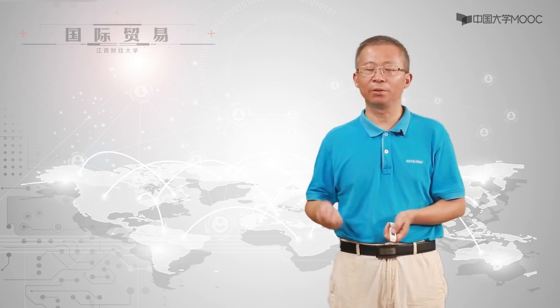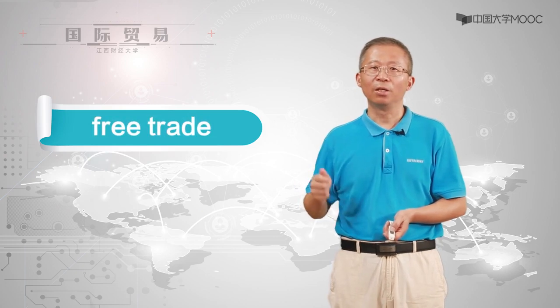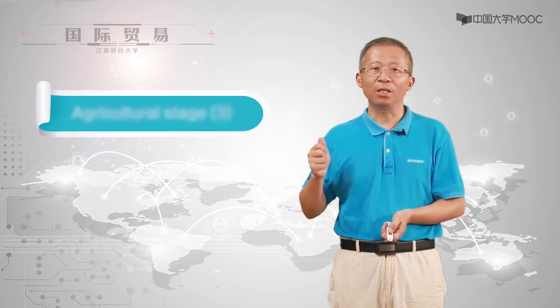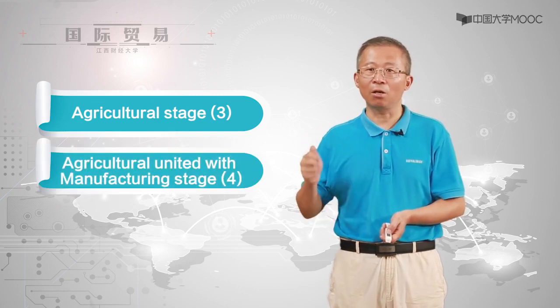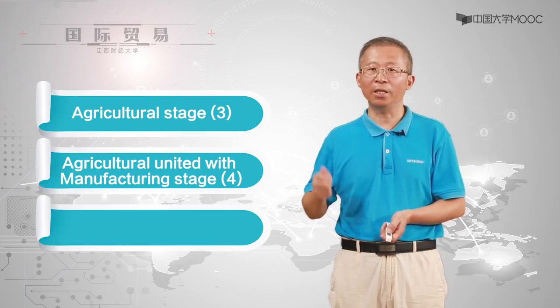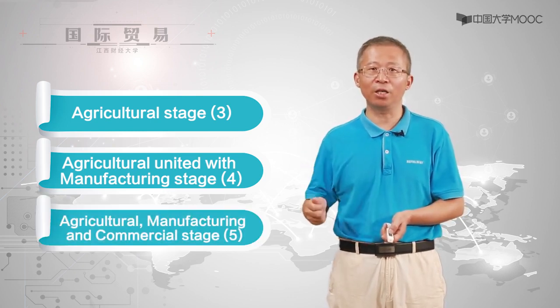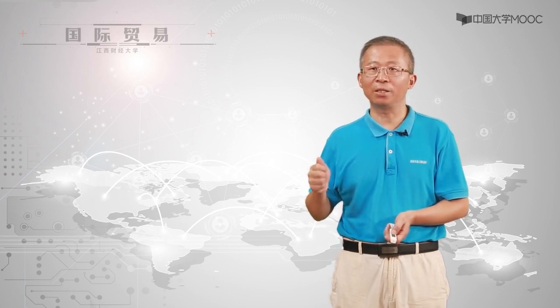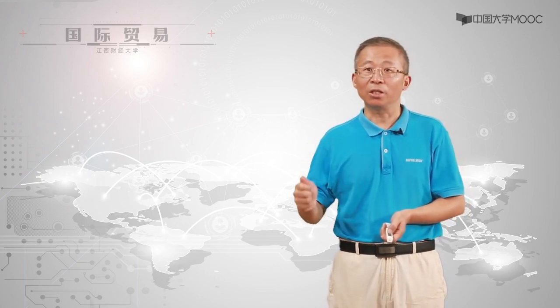According to List, every country should start with free trade. To develop a strong agricultural industry, they should export raw materials and import manufactures. They should then progress from the agricultural stage to the agricultural united with manufacturing stage, and later to the agricultural, manufacturing, and commercial stage. List assumed that such developments cannot emerge automatically through the natural causes of things, that is, through market forces alone.